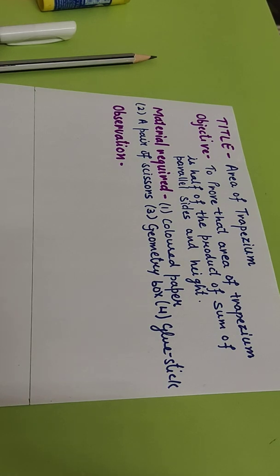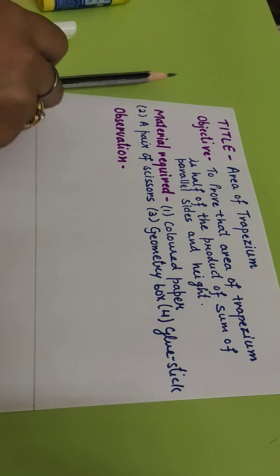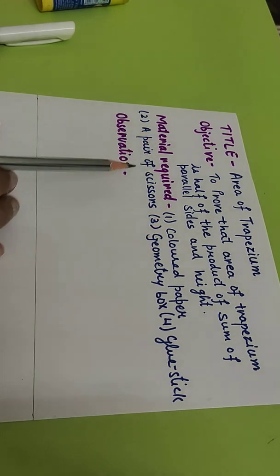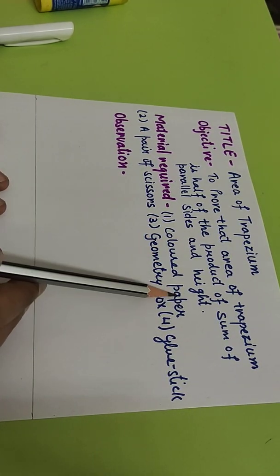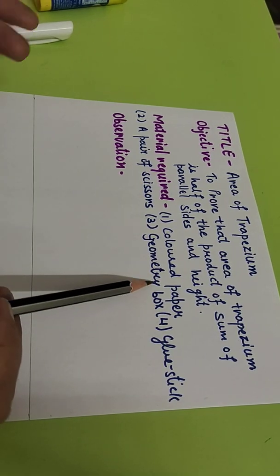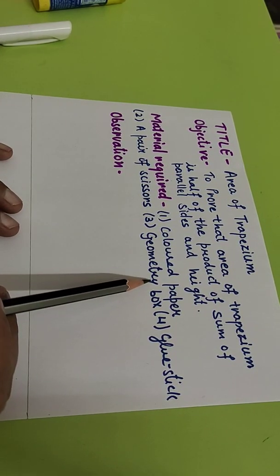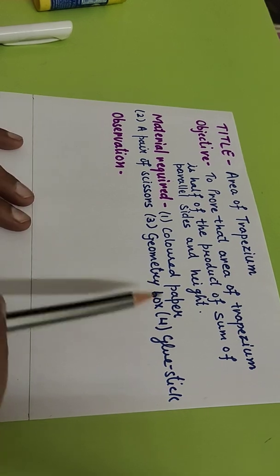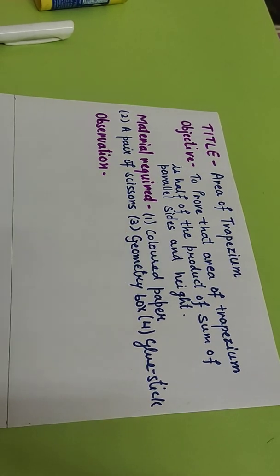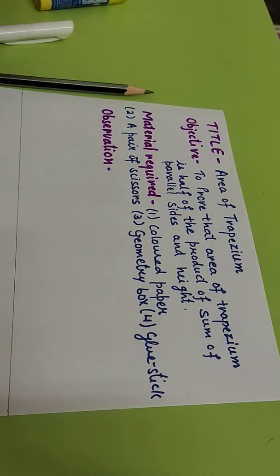Students, today we are going to do an activity to find out the area of a trapezium. We are going to use journal materials: colorful paper, a pair of scissors, a geometry box that includes things like eraser, pencil, and scale, and a glue stick. Before starting the activity, you should know what a trapezium is.